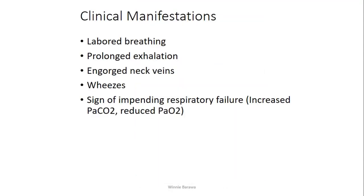What are the clinical manifestations for a patient showing status asthmaticus? Number one, we have difficulty in breathing, also referred to as labored breathing — the client shows signs as if suffocating or unable to breathe comfortably. They also show signs of prolonged exhalation, where after breathing in they seem unable to let out air comfortably. Then there are engorged neck veins, indicating the patient is really struggling to breathe and let air out.